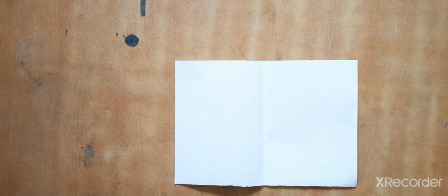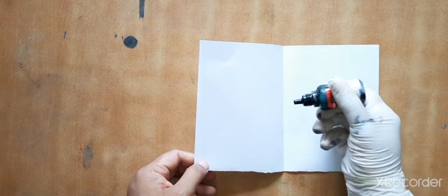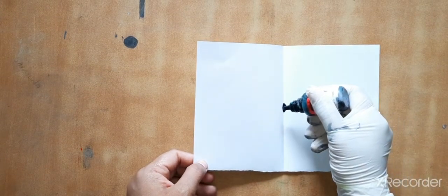First, we have to take a sheet of paper and then fold it into half. Open it, take the color, and pour a few drops in the middle. You can see a line here.